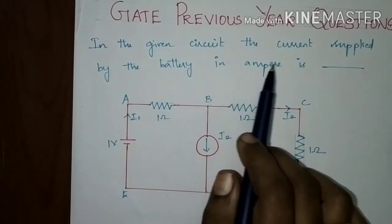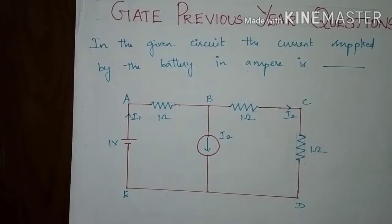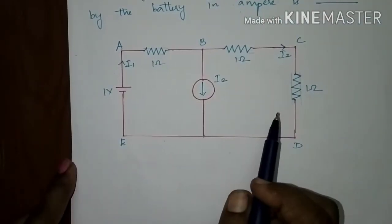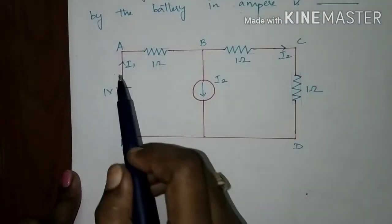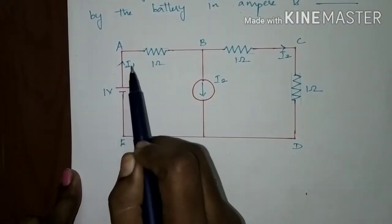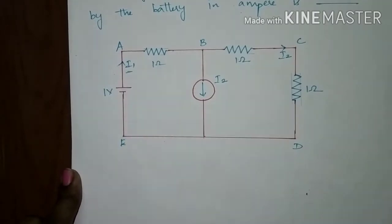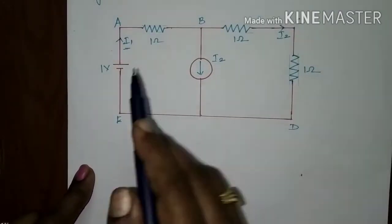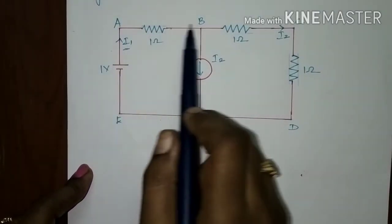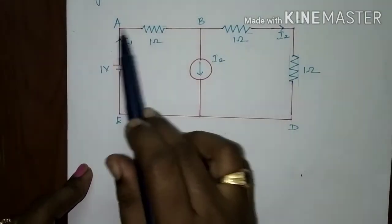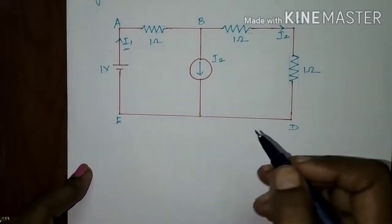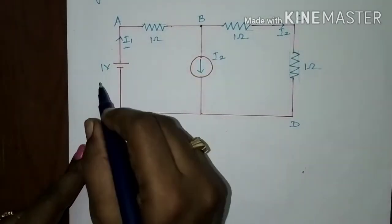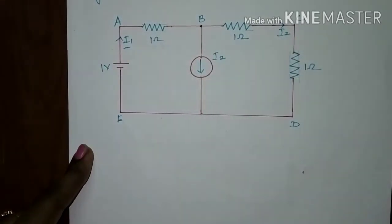In the given circuit, the current supplied by the battery in amperes is to be found. This is the circuit given; they have asked for the current supplied by this battery, which is i1. I have represented the nodes as A, B, C, D, and E. Now it is very easy to find this value.